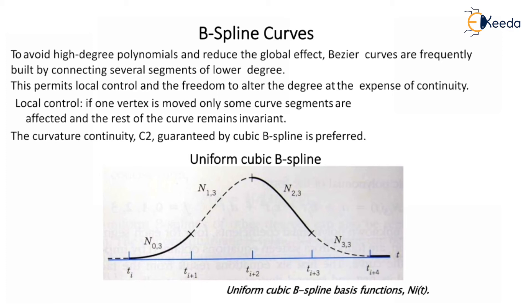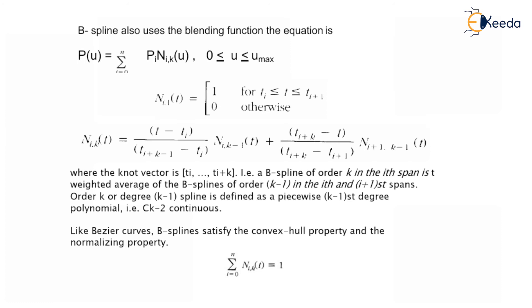That is N0,3, N1,3, N2,3, and N3,3. From that we have to modify the uniform cubic B-spline equation. So B-spline also uses the blending function. The equation is, from that above figure, the blending equation: summation of 0 to n, Pi Ni,k(u), 0 ≤ u ≤ umax.